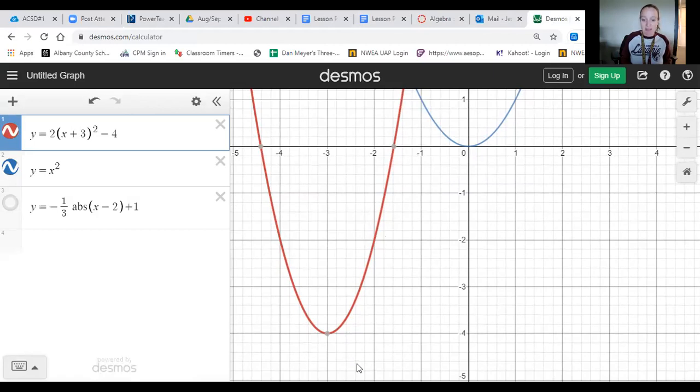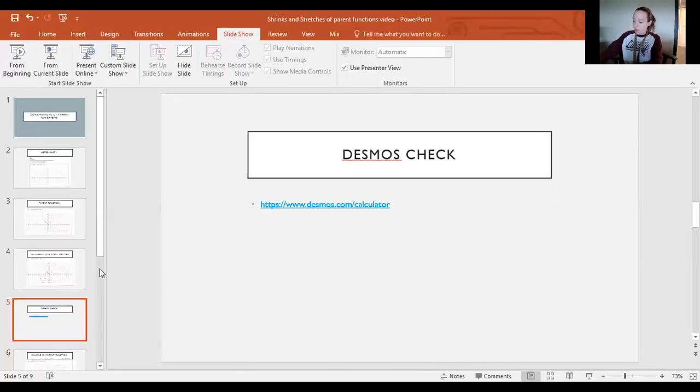All right let's go on to the second example. And what I'd like you to try first is to look at that second example and see if you can't draw the parent function. So go down to example two and do the negative one third absolute value of x minus two plus one and see what you can find.